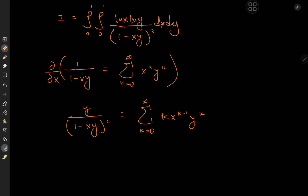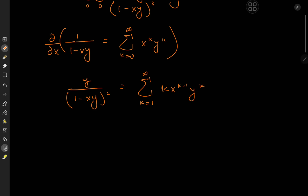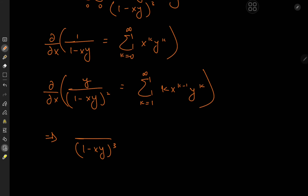Notice that because of the k up front, k equal to 0 just leads to a leading zero term, so we can start the sum from k equal to 1 instead. We have a square now, but we want a cube. So we differentiate partially with respect to x again. This gives something over (1 minus xy) cubed; there will be a negative 2y on top, but again because of the negative y it cancels out, leaving 2y squared.